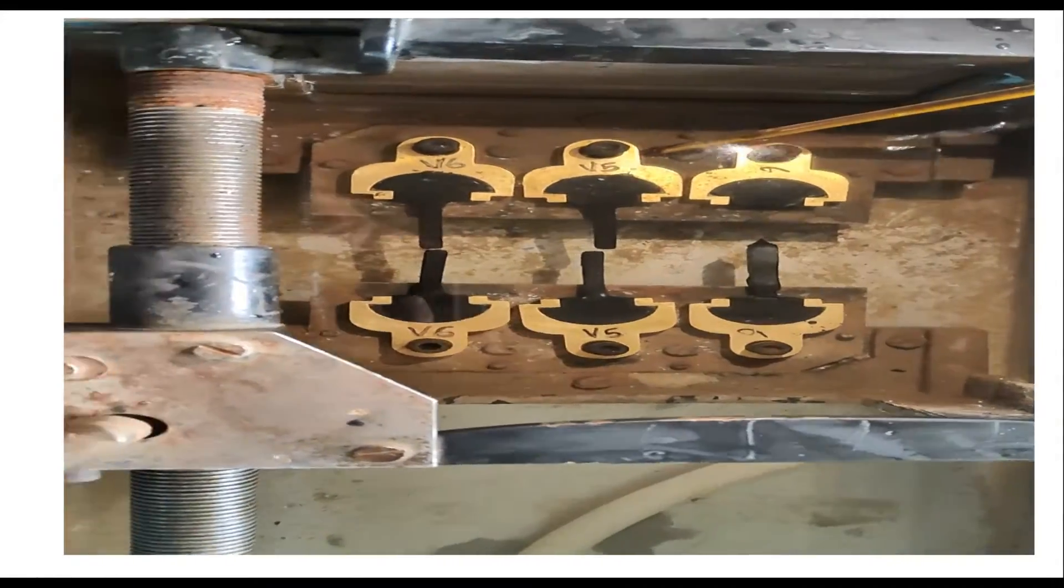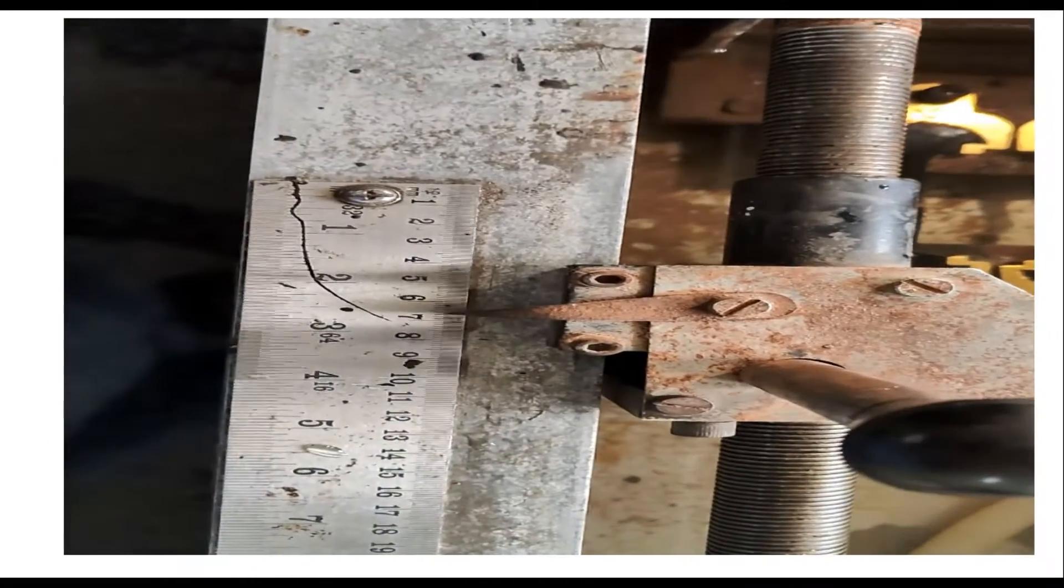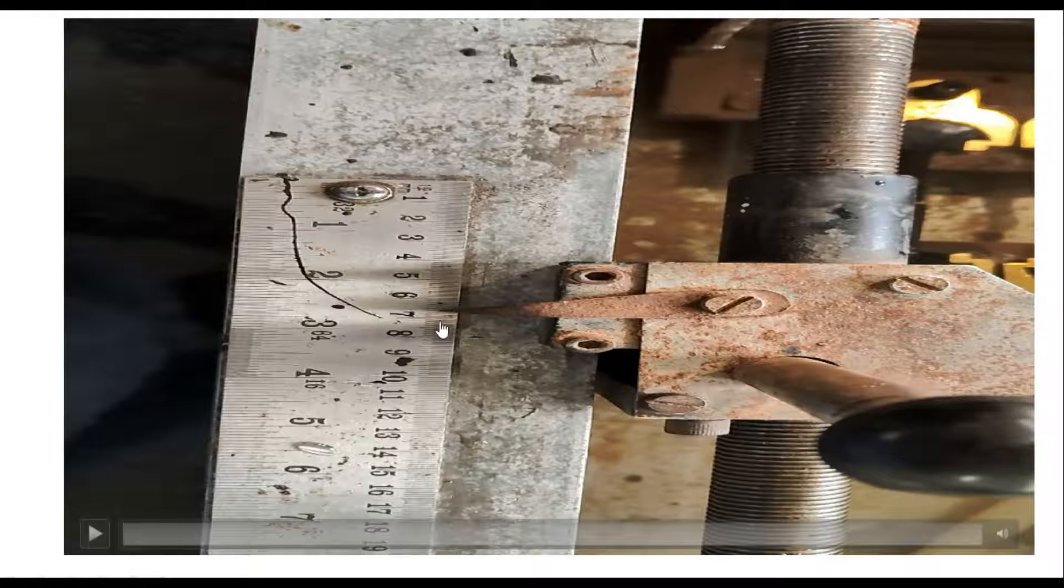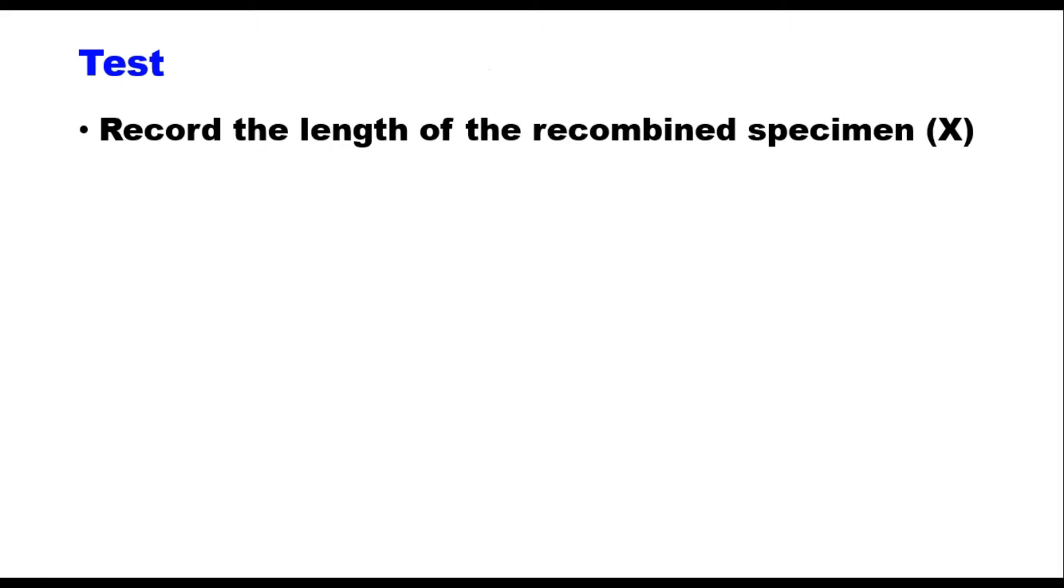Bring these samples and move the elongated half back into position near the fixed half, then measure the value on the scale. Record the length of the recombined specimen—let it be X. Then elastic recovery equals (10 - X) / 10 × 100, because 10 was the original length and the recombined length is X. So 10 minus X is the recovery, that is your percent recovery.